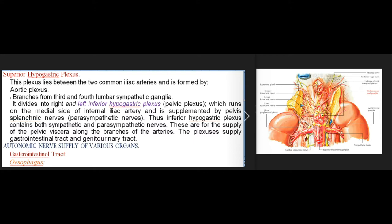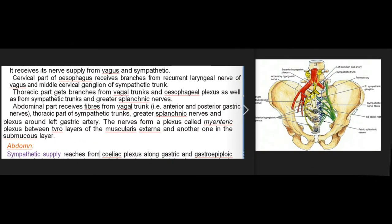Autonomic nerve supply of various organs. Gastrointestinal tract — Esophagus: it receives its nerve supply from the vagus and sympathetic. The cervical part receives branches from the recurrent laryngeal nerve of the vagus and the middle cervical ganglion of the sympathetic trunk. The thoracic part gets branches from vagal trunks and esophageal plexus as well as from sympathetic trunks and greater splanchnic nerves. The abdominal part receives fibers from the vagal trunk (anterior and posterior gastric nerves), thoracic sympathetic trunks, greater splanchnic nerves, and plexus around the left gastric artery.